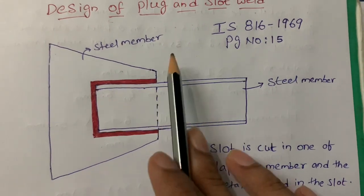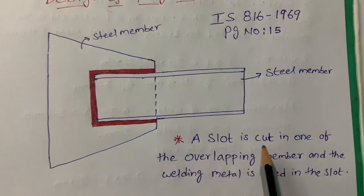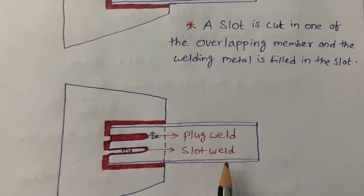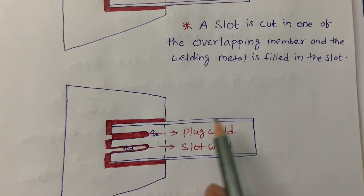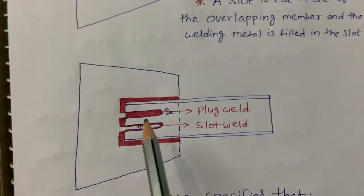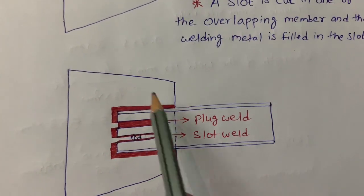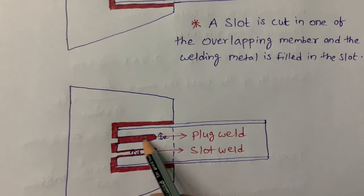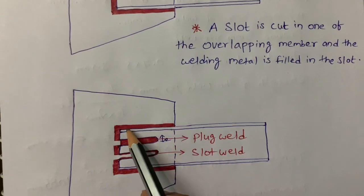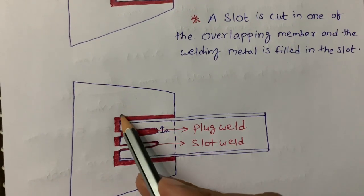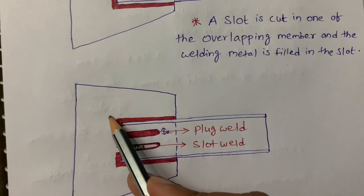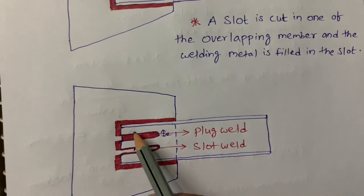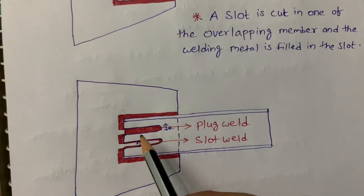Slot means a cut is made in one of the overlapping members and the welding metal is filled in the slot. So here is one member and another member — full welding is there, but we provided one slot and another slot. This is because the overlap length of the steel member is limited — we need not overlap all the way. At that case, we provide slot welding.